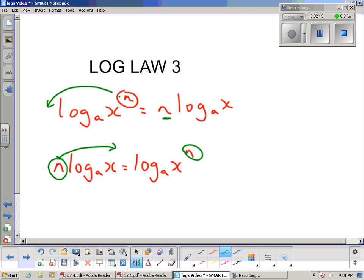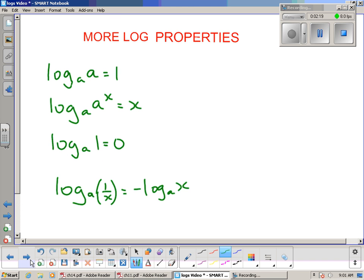All right, now we've got a few other—that's the three main log laws. We've got a few other log properties that we'll go through now. I'll show you some examples. Here we've got log to the base a—this is called our base down here.